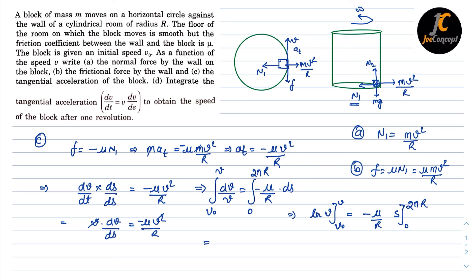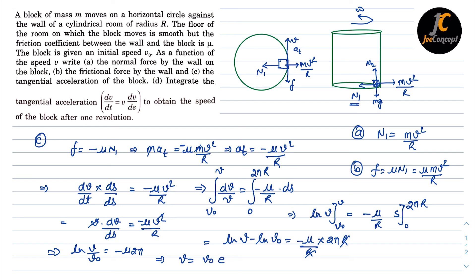This becomes ln v minus ln v0 equals minus mu/r times 2πr. The r cancels, giving ln(v/v0) equals minus 2πmu. Therefore, v equals v0 times e^(−2πμ). This is the solution to the problem.